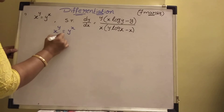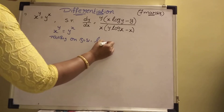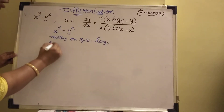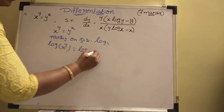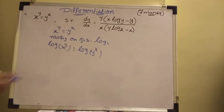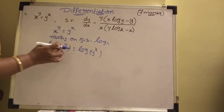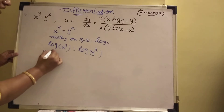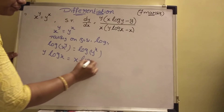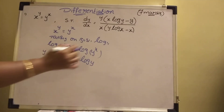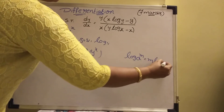Taking log on both sides: log of x power y equal to log of y power x. Now, power comes to the front using the formula log of a power m equal to m log a. Using this formula, you will get y log x equal to x log y.